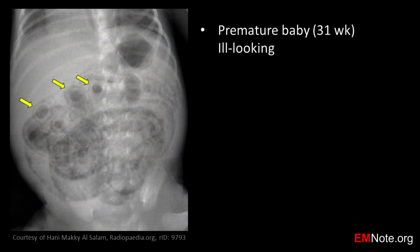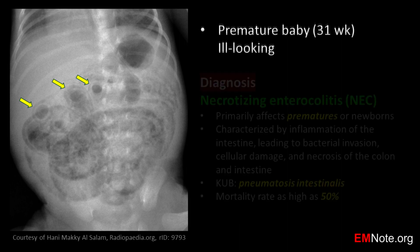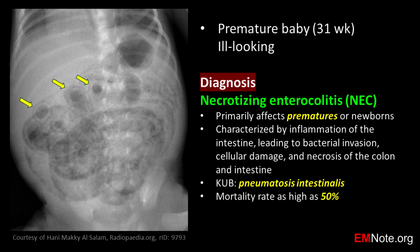This is the plain abdominal film of an ill-looking premature baby. The diagnosis is necrotizing enterocolitis, NEC. NEC primarily affects premature or newborn babies and is characterized by inflammation of the intestine, leading to bacterial invasion, cellular damage, and necrosis of the colon and intestine. Pneumatosis intestinalis is a condition where gas accumulates within the intestinal wall, as shown in the KUB radiograph.